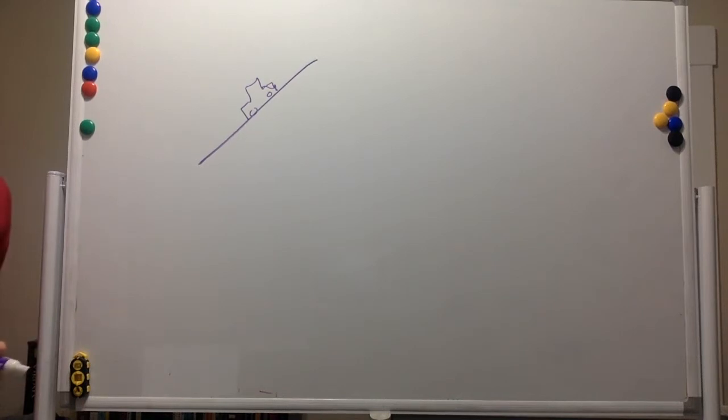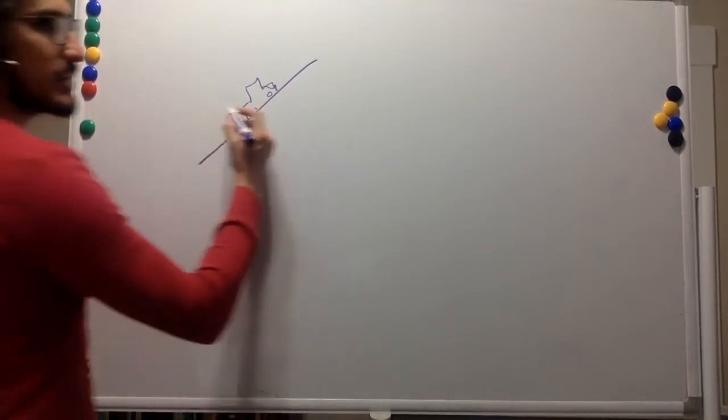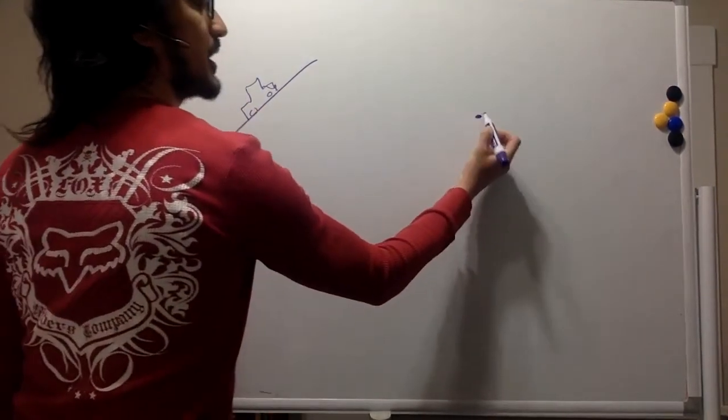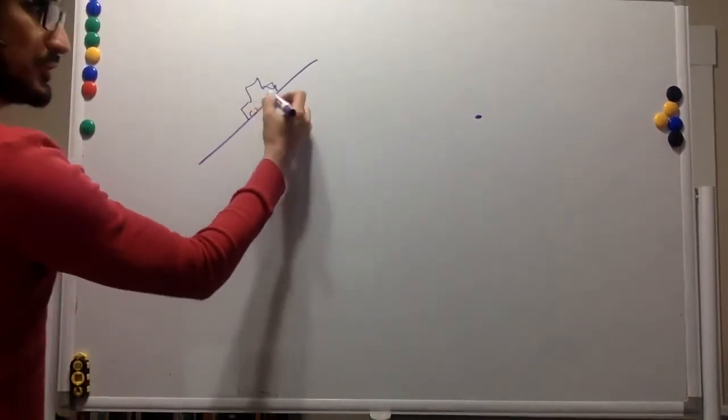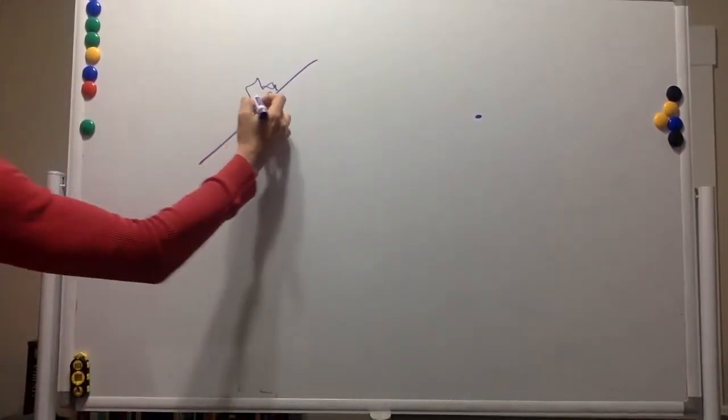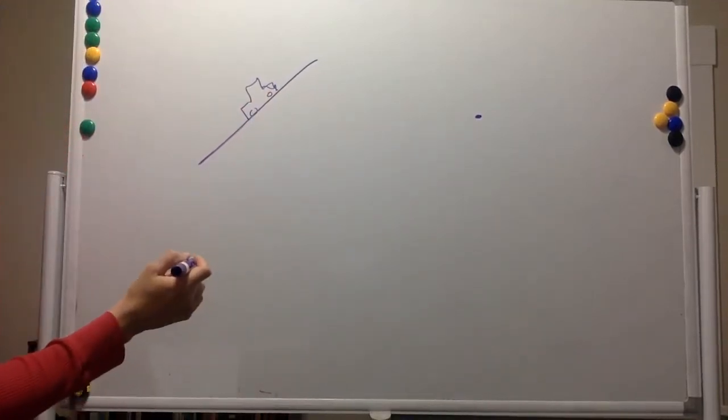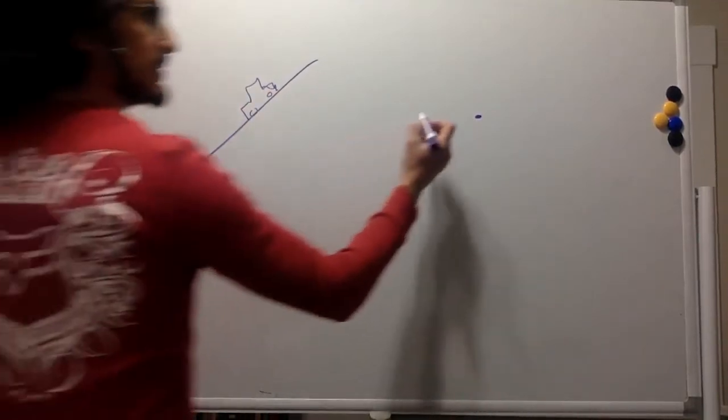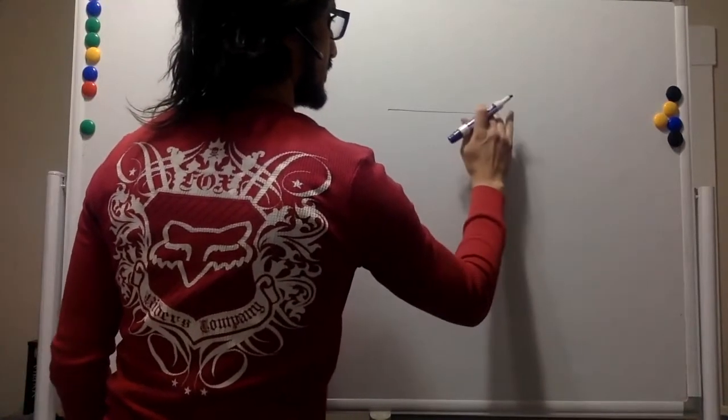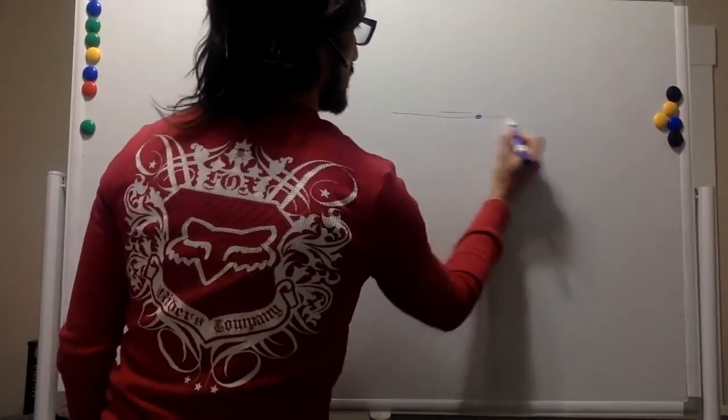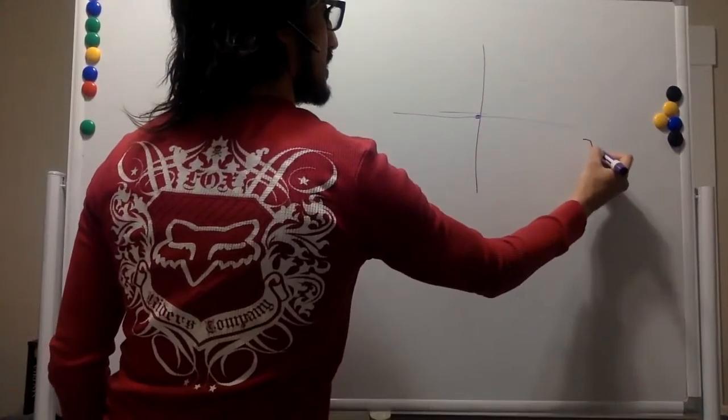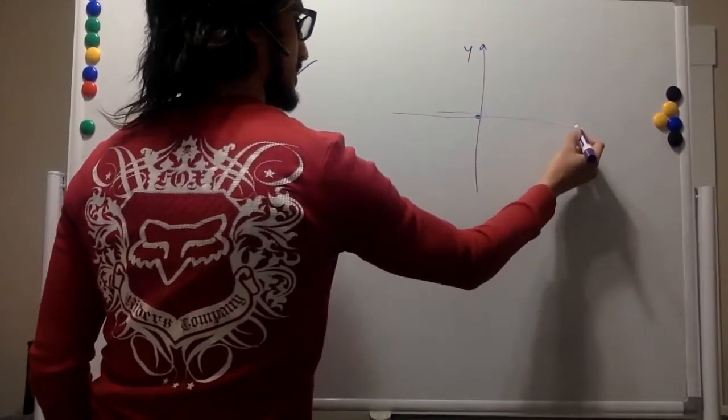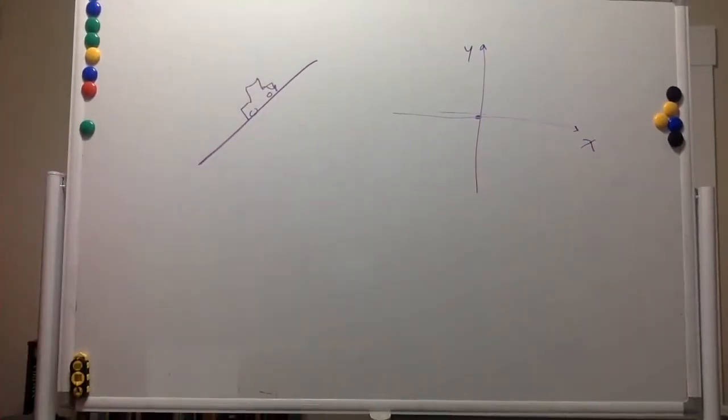And you have to identify the forces on the car and draw the free body diagram of the car. So a free body diagram is just a point that represents the whole body. So a point represents this car and has the x and y axis.